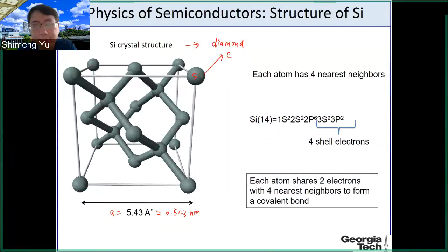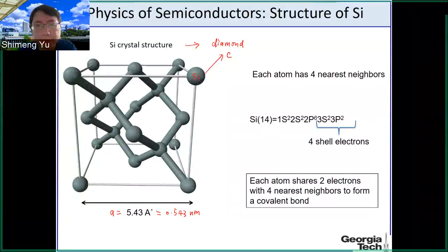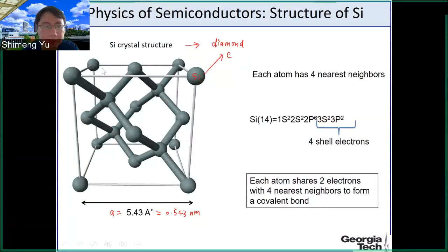This is the same structure as carbon in diamond form. Carbon may have other forms — if it has a hexagonal structure, it's more like graphite. But if it has this kind of structure, it's diamond. Silicon has the same structure as diamond.